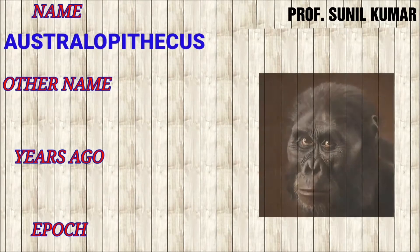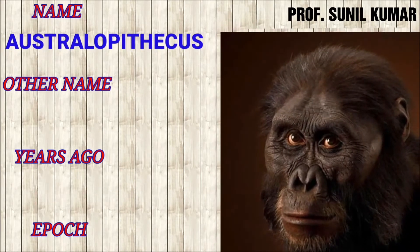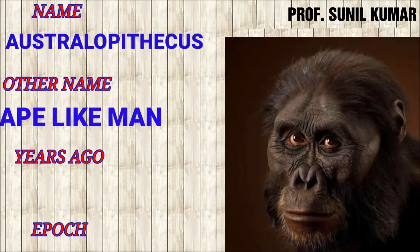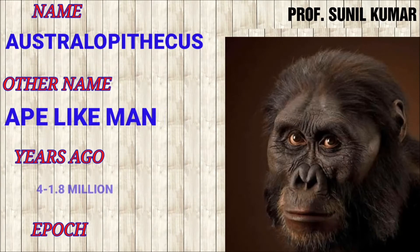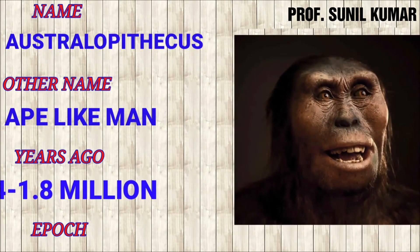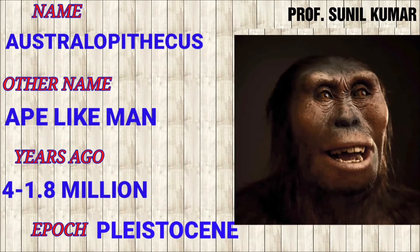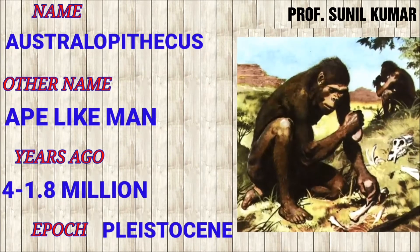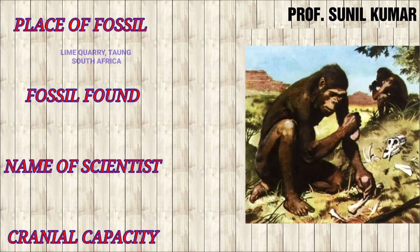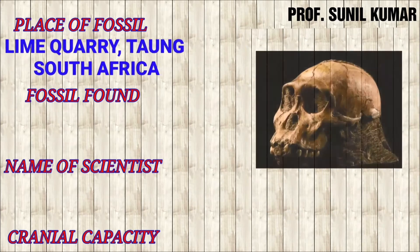The next stage is Australopithecus, also known as ape-like man — they showed characteristics of both ape and man. They lived 4 to 1.8 million years ago and were found in the Pliocene epoch. The fossil of Australopithecus was obtained in a lime quarry town in South Africa, and what was found was just the skull cap of a child.